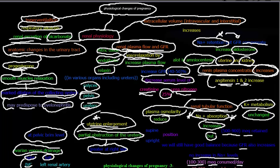Finally, regarding extracellular volume: both the intravascular and interstitial volumes increase in pregnancy, while intracellular volume remains unchanged. This was also discussed in the cardiovascular changes video, where overall plasma volume and red blood cell volume increase. This is due to the renin-angiotensin system promoting sodium and water retention. That covers all the renal physiological changes in pregnancy. Thank you for watching — see you in the next video.